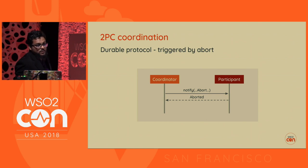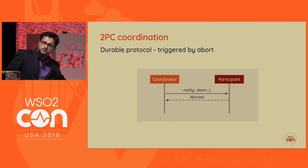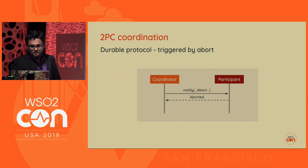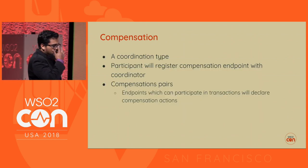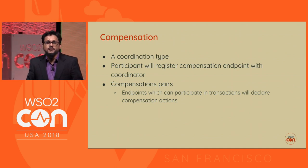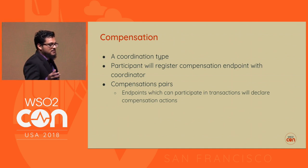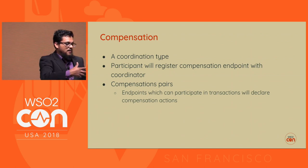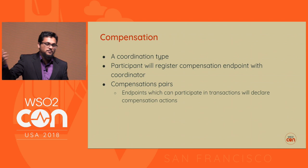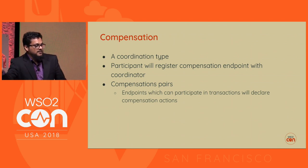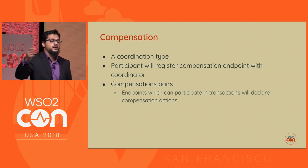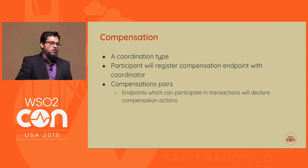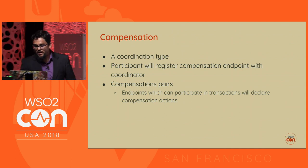Compensation is another coordination type. The difference here is that during registration, participants pass in a compensation endpoint in addition to the usual registration information. Instead of calling prepare and abort, if the transaction fails and we want to abort, we call that compensation endpoint. That's mainly the difference.